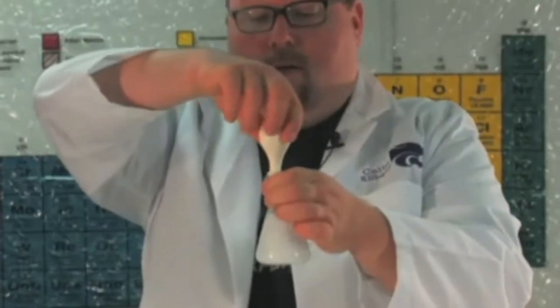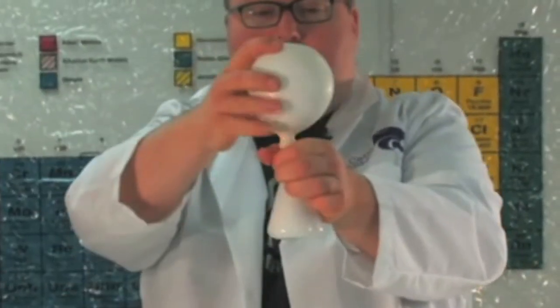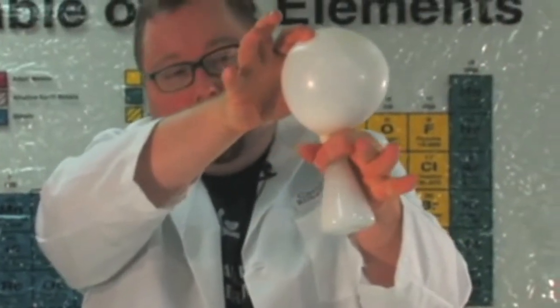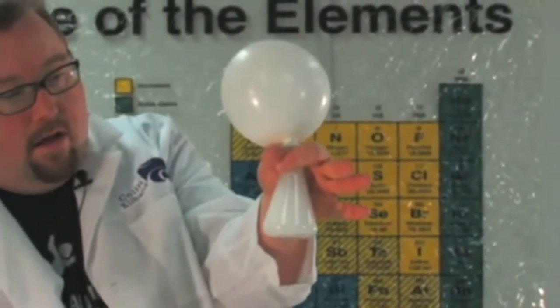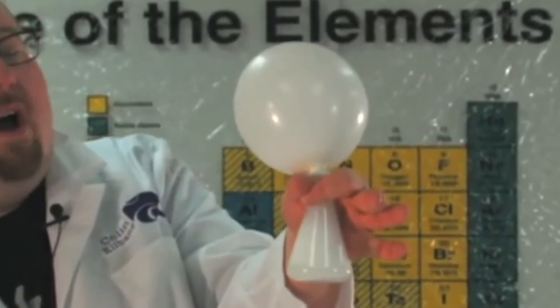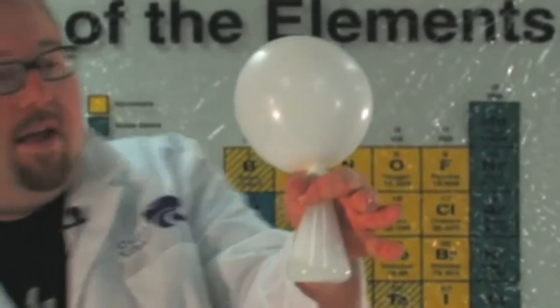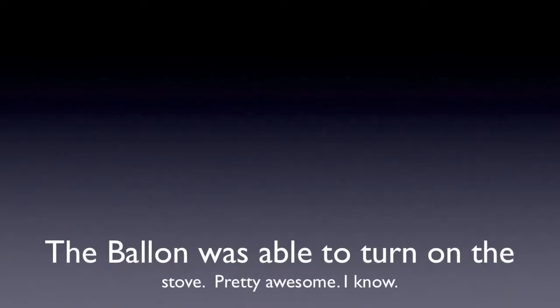We start out the video with baking soda and vinegar, and you're going to get a chemical reaction that creates carbon dioxide to make the balloon go higher. Then when the balloon touches the ceiling — as you're going to see right about now — it hits something which enables the stove to be turned on.